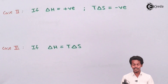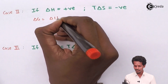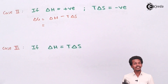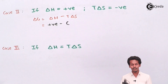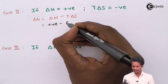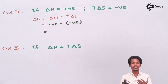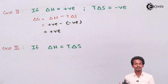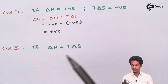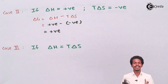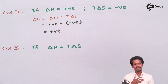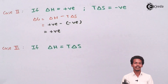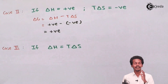Case 2: if ΔH is positive and TΔS is negative, applying ΔG = ΔH − TΔS — with ΔH positive and TΔS negative — the overall ΔG will be positive. A positive ΔG indicates the reaction is non-spontaneous. This is also consistent because ΔS being negative indicates non-spontaneity, and ΔH being positive indicates an endothermic reaction, which is typically non-spontaneous.